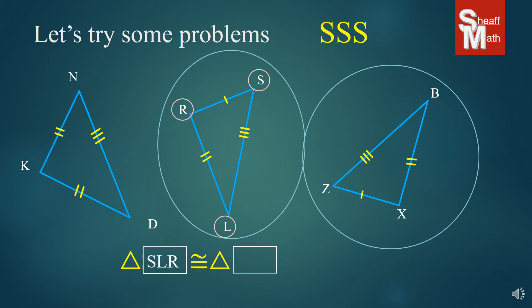I'll go across the three-tick marks to L, and then across two to R. So, SLR is my triangle. And so, then on the second one, I have to go in the same corresponding order. And so, my S matches to Z. And I'm going to go across the three-tick mark, and then across the two-tick mark. And so, I get ZBX.